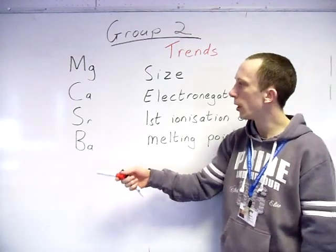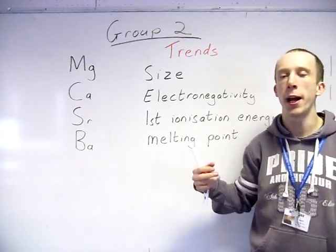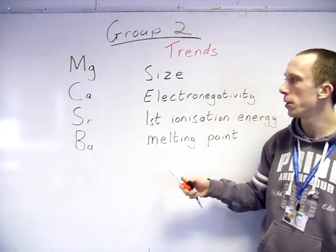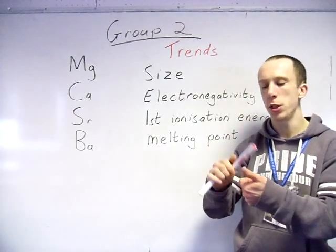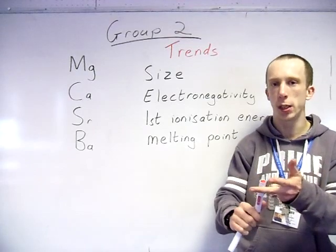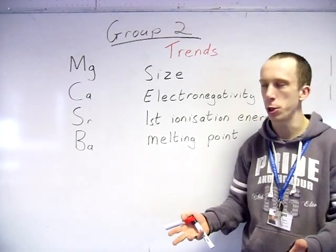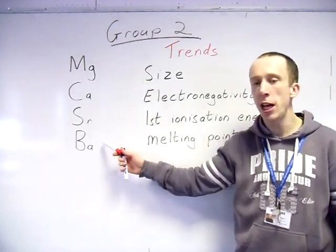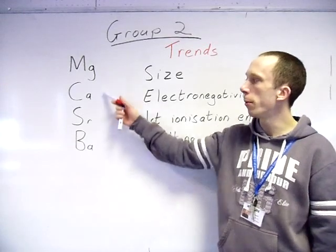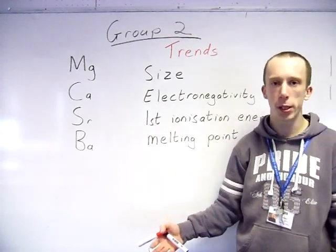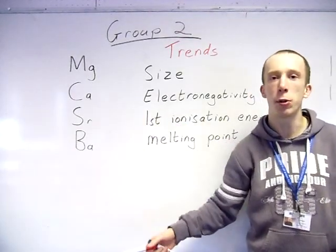Next one: electronegativity. You should recall the definition of that, so it's the power of an atom to attract electrons in a covalent bond. Going down the group, think back to Chem 1, your three factors: you've got nuclear charge, you've got atomic radius, you've got shielding. Yes, the nuclear charge going down the group increases, so that will be supplying more attraction. However, the radius increases, so an increase in radius will be reducing the attraction. And also because there is an increase in amount of shells, there will be more shielding that will also reduce the attraction. Hence overall, electronegativity down the group decreases.